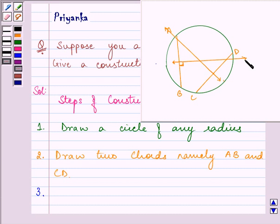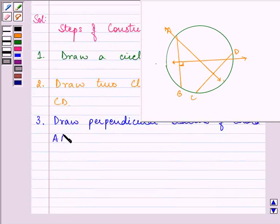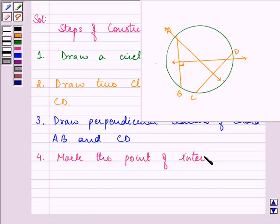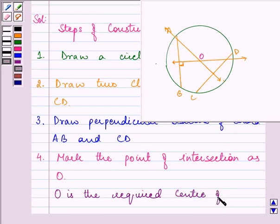Let us write it down also. What we have done over here is drop perpendicular bisectors of chord AB and CD. Mark the point of intersection as O, and O is the required center of the circle.